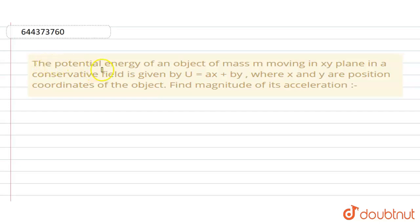Hello everyone. The potential energy of an object of mass m moving in xy plane in a conservative field is given by U equals ax plus by, where x and y are position coordinates of the object. Find magnitude of its acceleration.